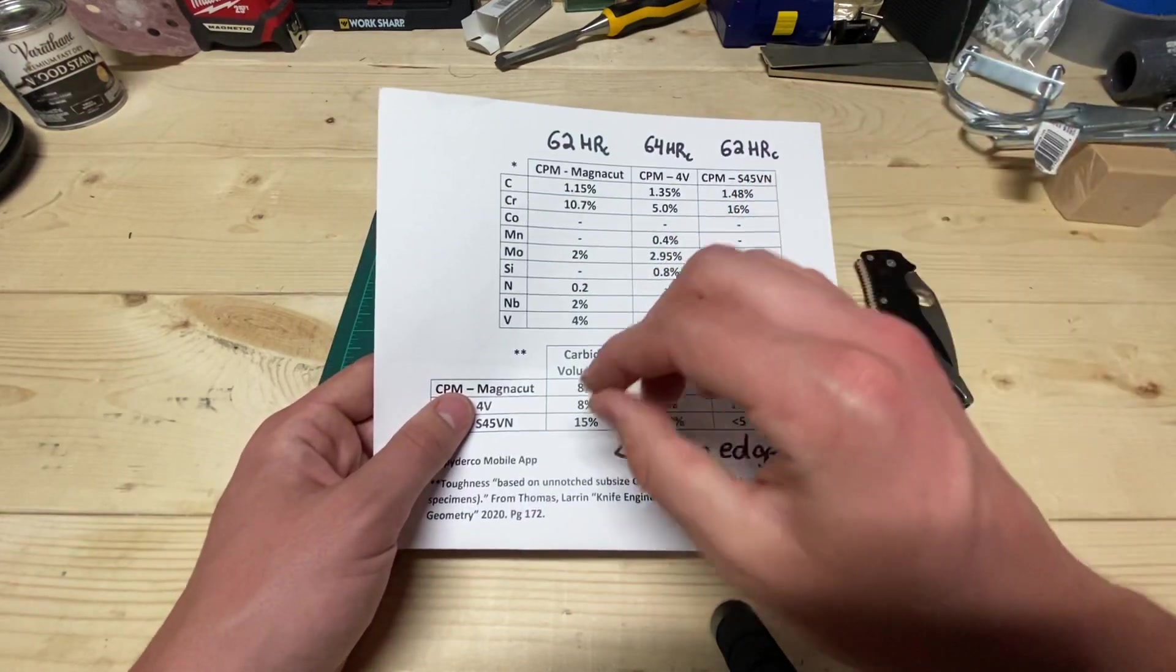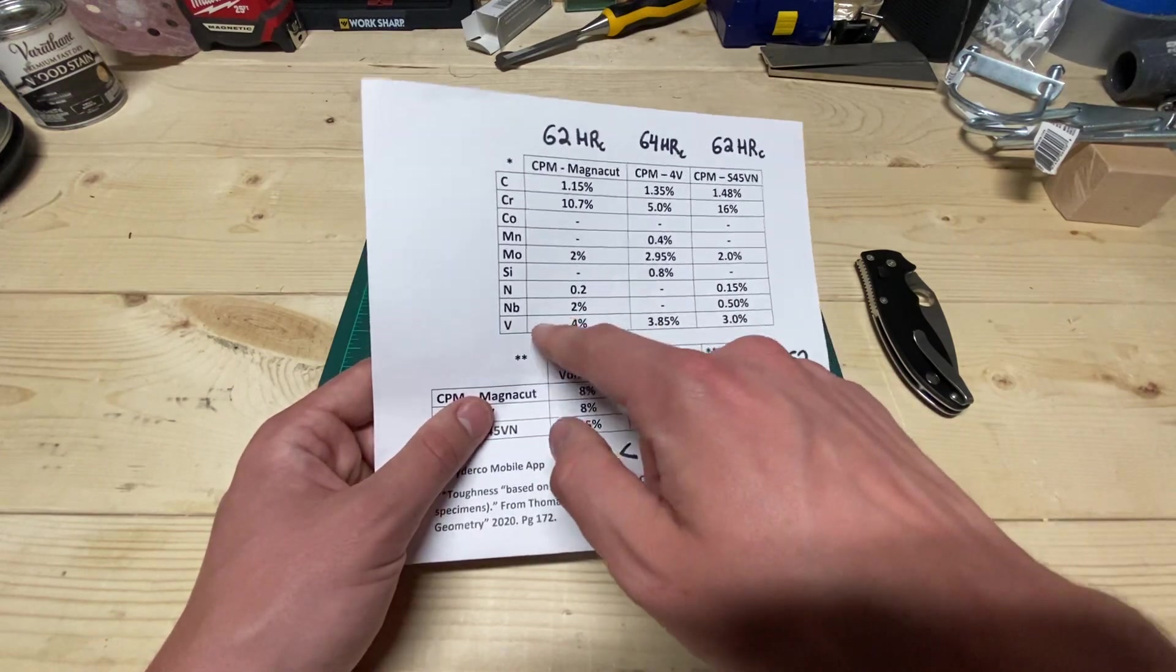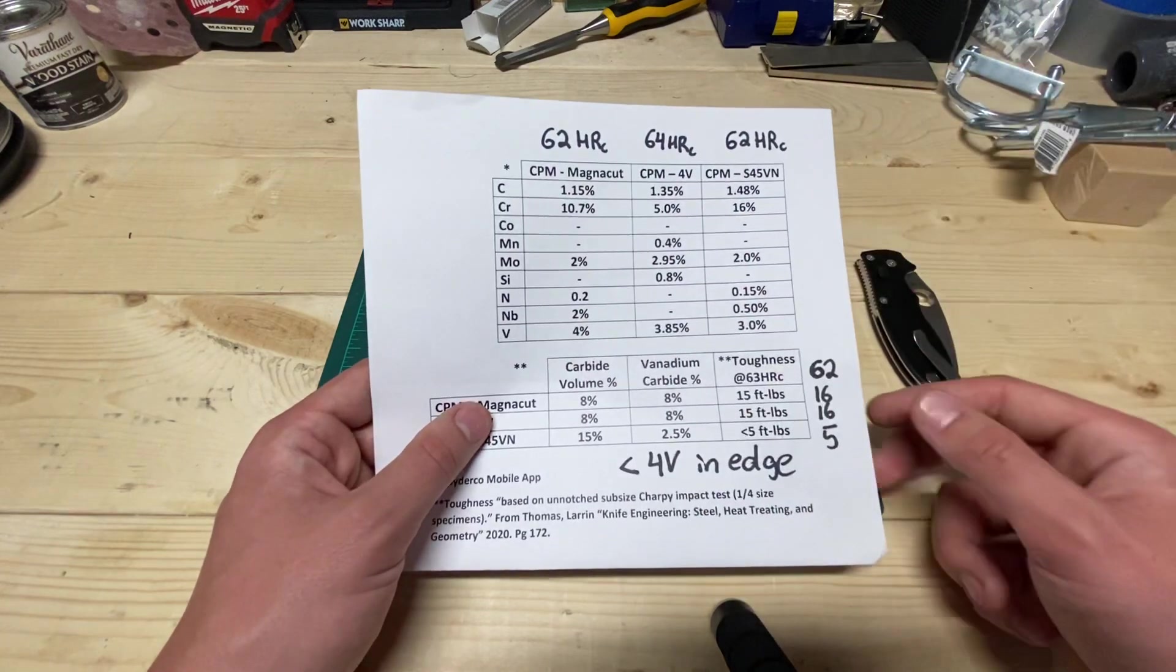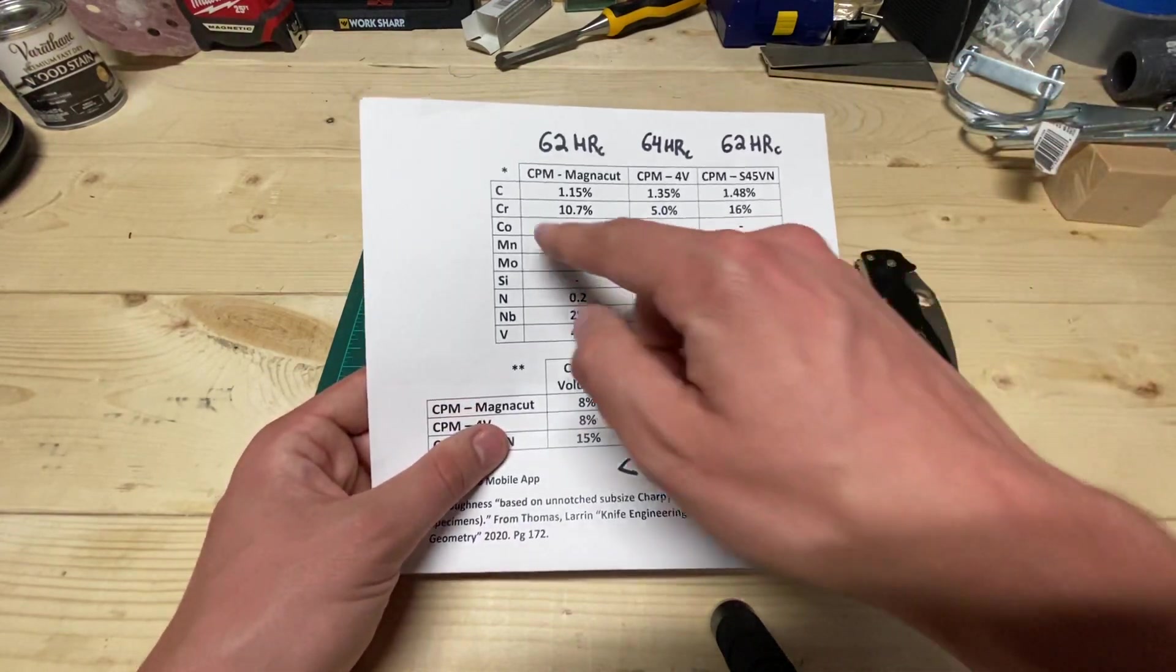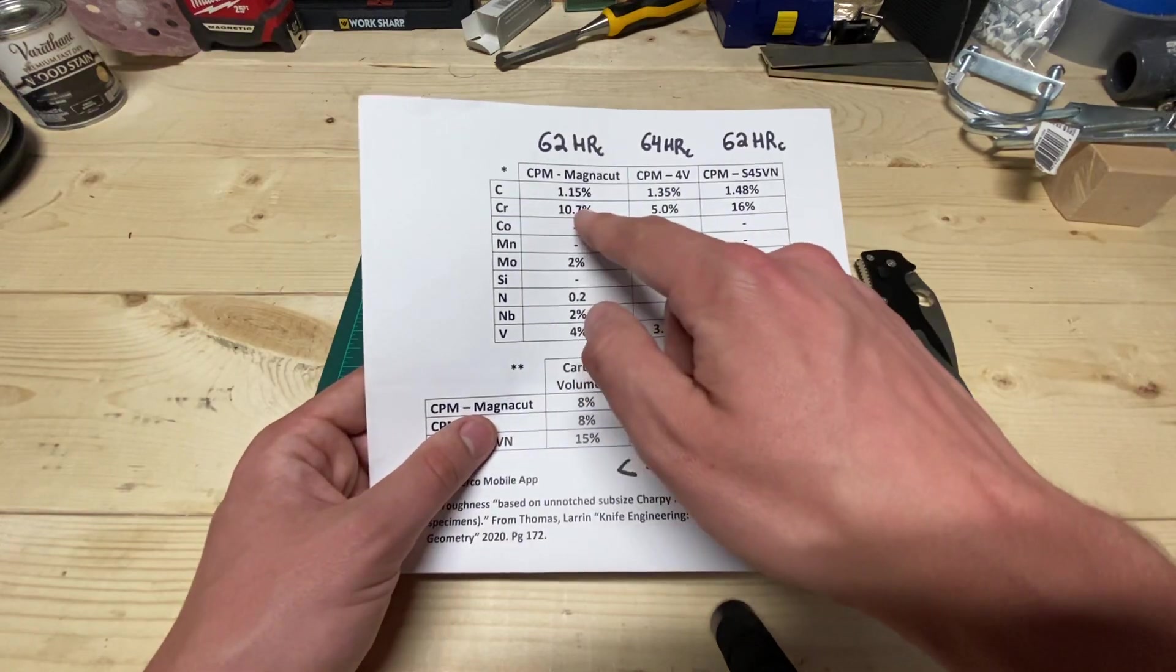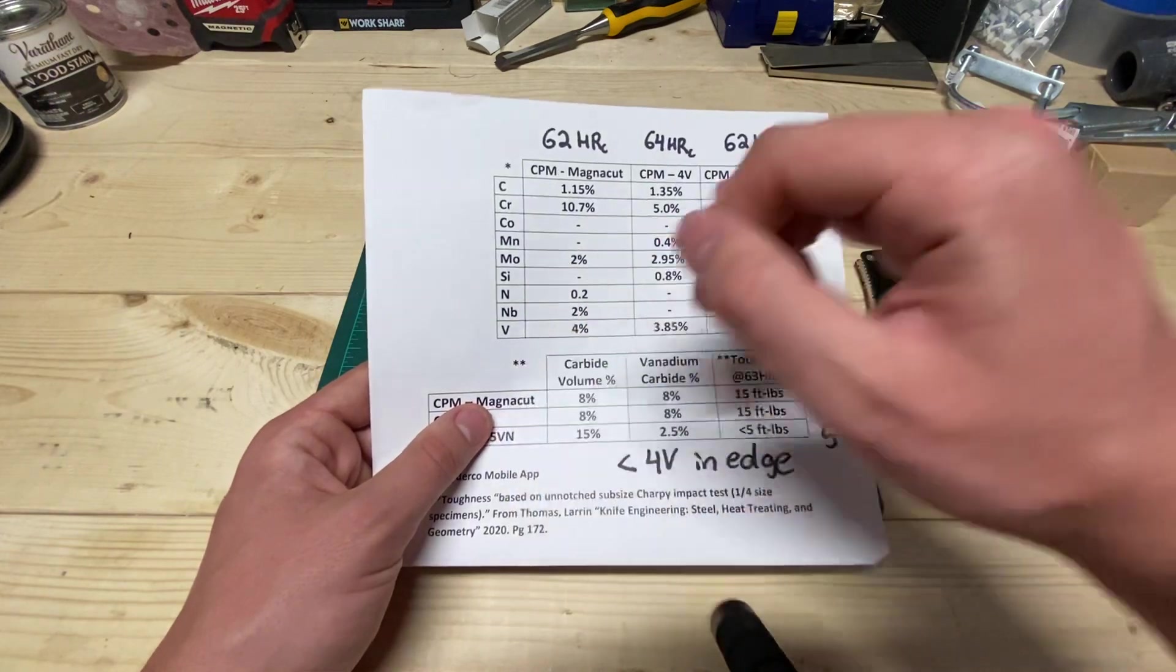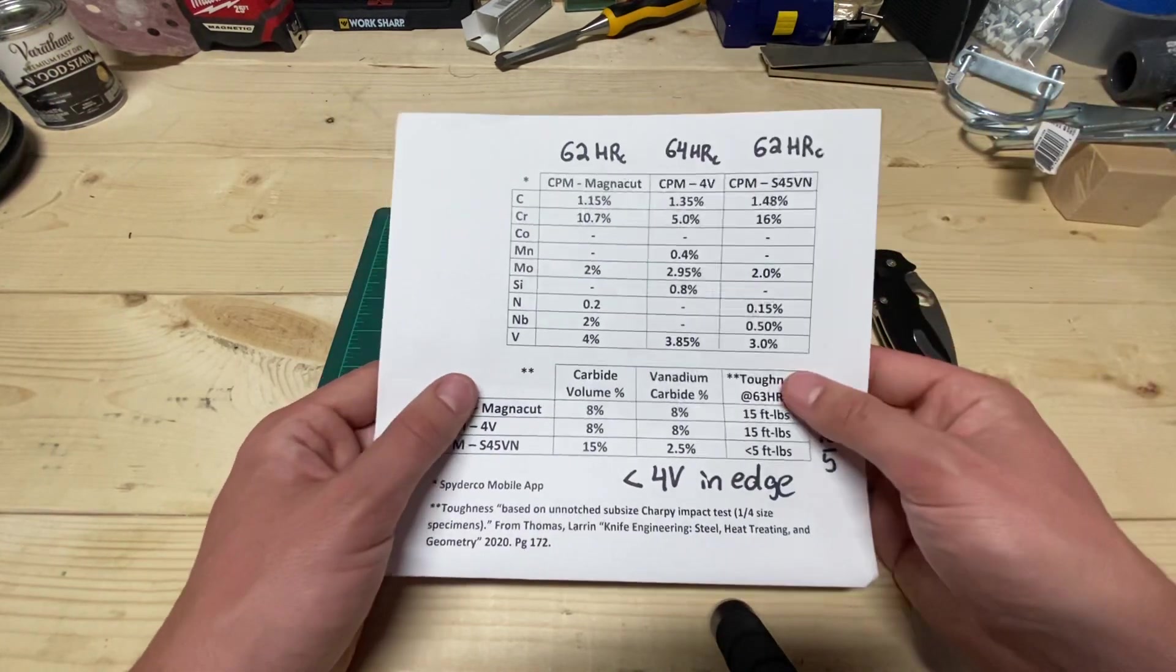But what Larrin did is using addition of nitrogen, using the addition of niobium and limiting the amount of carbon that's in there, he was able to balance it just right, so that none of this carbon gets bound up with that chromium, and all of the carbides that are formed are niobium or vanadium carbides, and I think even some nitrides.